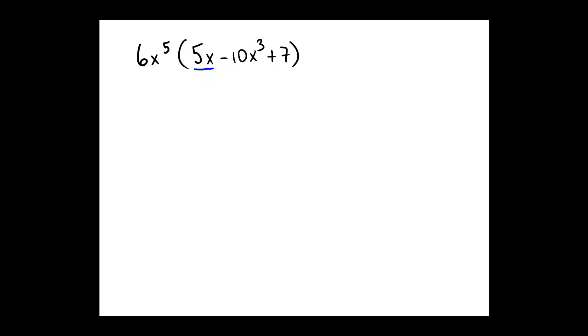let me underline the first part with blue, the second part with green, and the third part with this orange here. So we're going to have to distribute a monomial through a trinomial here. And so again, I'm going to put in my little arrows for my distributive property.